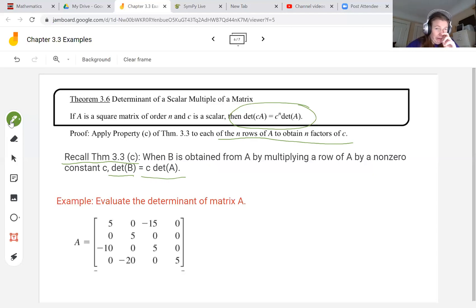Let's use that to evaluate the determinant of matrix A here. I looked at matrix A to see if there's any constant that's multiplied through by each of the rows, and there is—it looks like there's a 5 in each of these rows.